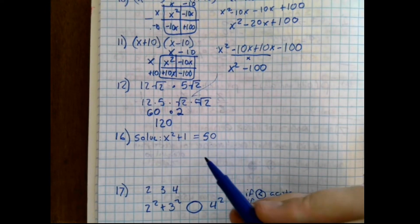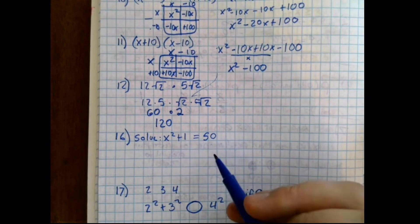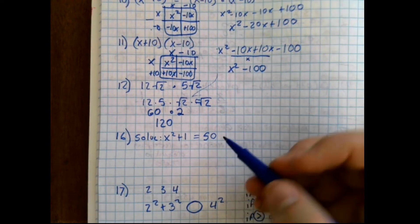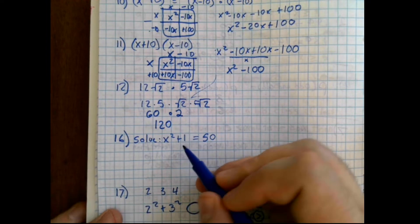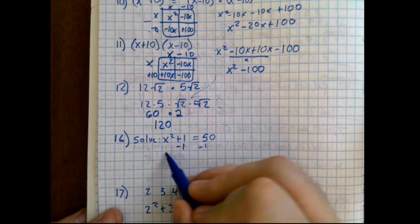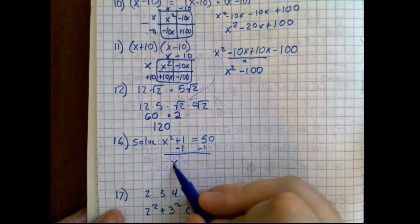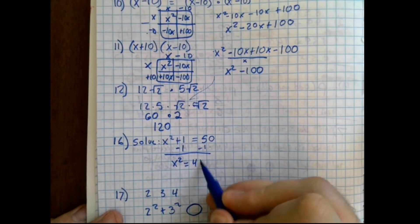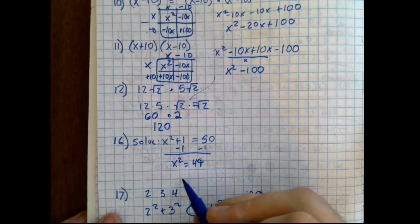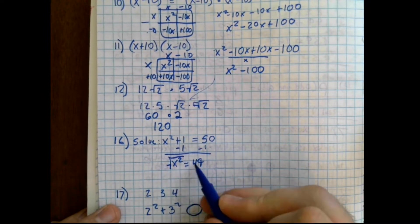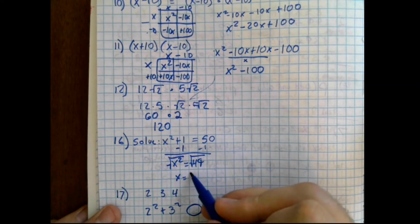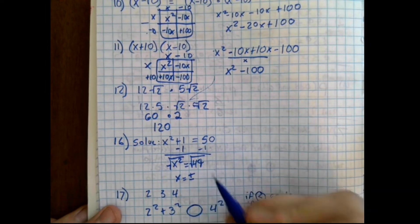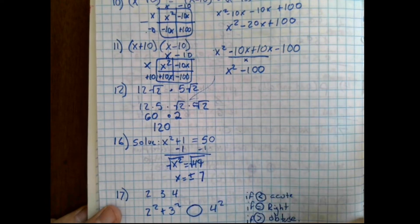Now, question 16 says x squared plus 1 equals 50. Our first step to solve for x and isolate is to subtract 1 from both sides. That will give us x squared equals 49. Now, in order to get x by itself, we need to get the square root. That will give us x on one side and now we've used a square root. We have to use a plus or minus and the square root of 49 is 7.